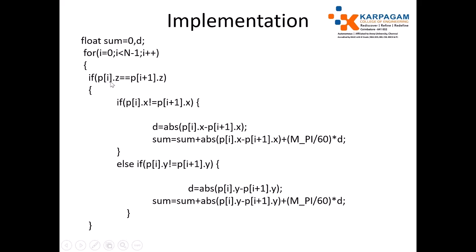I compare one data point with another to check whether it travels on the same face. For the first check, I compare the Z axis value of two consecutive data points. If they are equal, it traveled on the same face. If traveling on the same face, I check if the X value of the first data point is not equal to that of the second — then I find the absolute difference. That value is the straight-line distance plus the arc length, calculated by π/6 multiplied by the distance. This is stored in the sum variable.